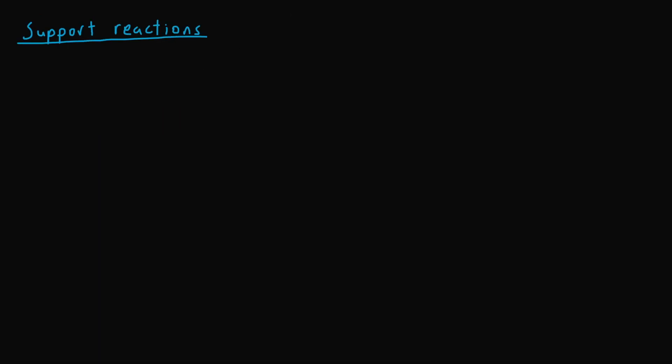Now reviewing support reactions, which are critical in the study of mechanics of materials, just as they were in statics. First, taking a look at a cable: the cable supports a beam to a fixed wall, and there is an angle between the vertical axis and the cable. The cable creates a tensile force pulling on the beam, so the reaction in our free body diagram is simply a tensile force in the direction of the cable with the same angle theta — tension meaning the force points outwards.